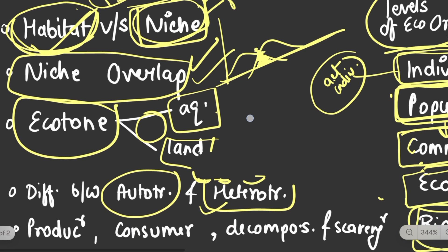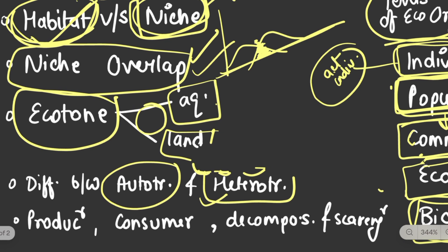Now we talked about aquatic system and land ecosystem. So here comes ecotone. This is ocean, this is land. There is a junction between two ecosystems - one is aquatic ecosystem and this is land ecosystem. We call it ecotone.